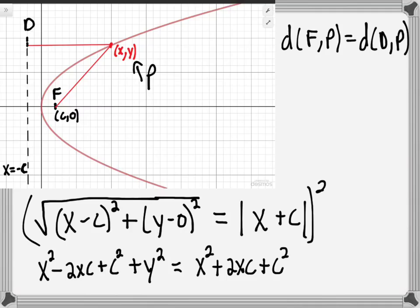This is also the equation of a parabola, but it's still not very nice looking. We can cancel the x² terms from both sides, cancel the c² terms, and then add 2xc to both sides.